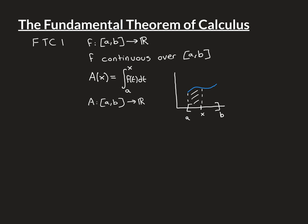We know these integrals are all guaranteed to exist. There are two arguments for this: either use the additivity property, since F is Riemann integrable over [A, B] and therefore over any sub-interval [A, X]; or use continuity — if F is continuous over [A, B], then over any sub-interval [A, X] it is also continuous everywhere, and therefore Riemann integrable. So A(x) is well defined for all values of X.